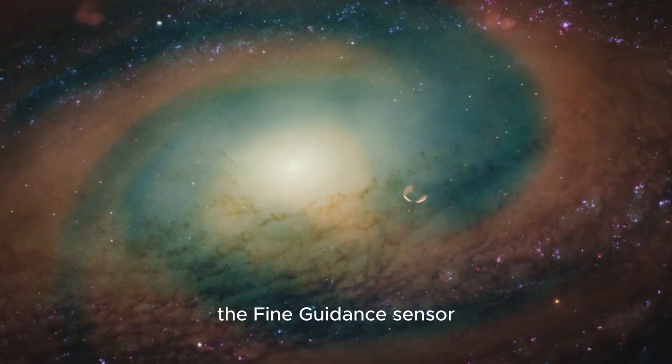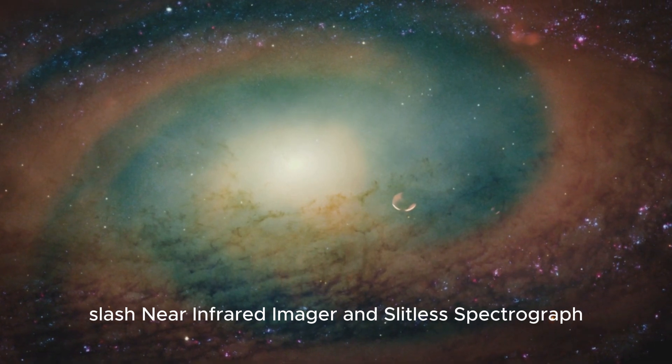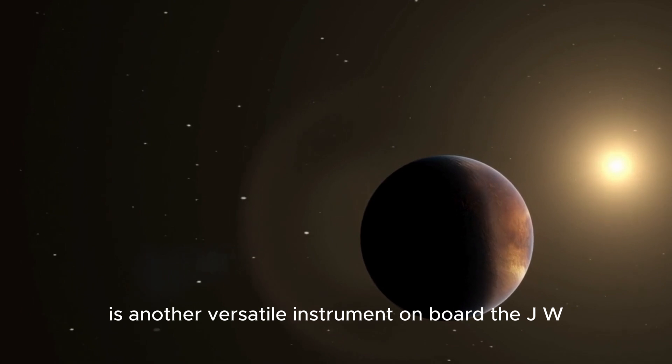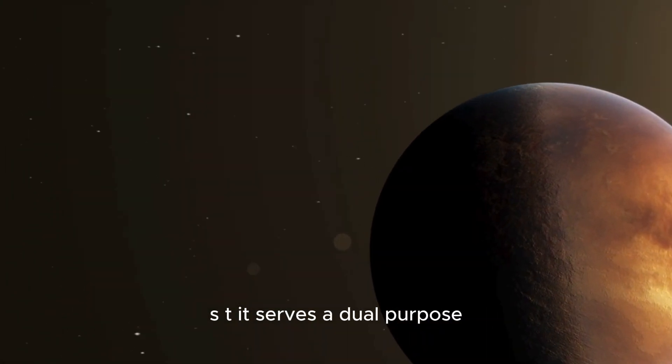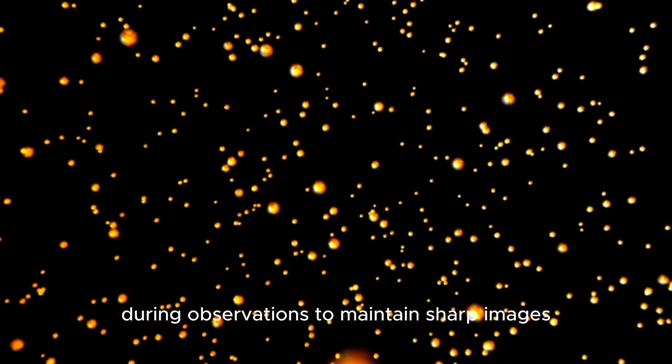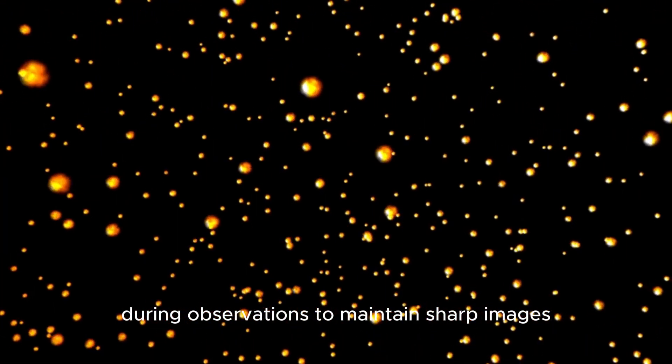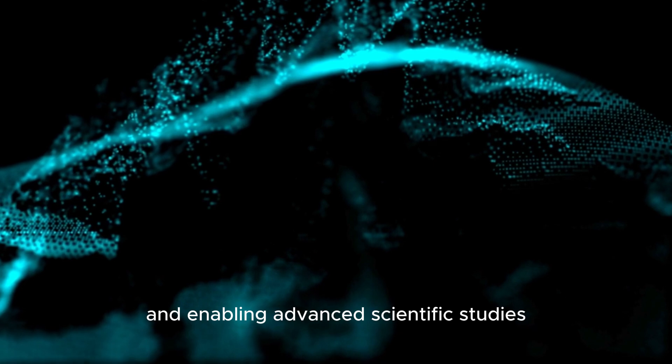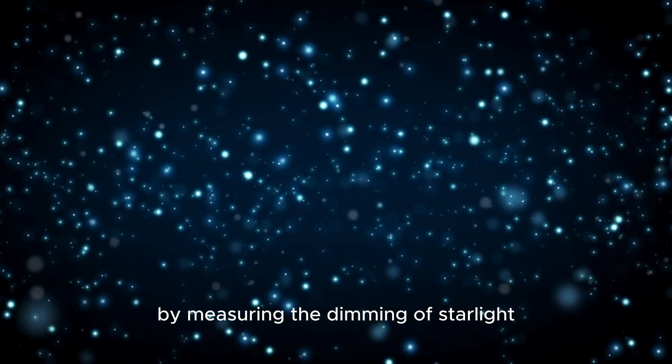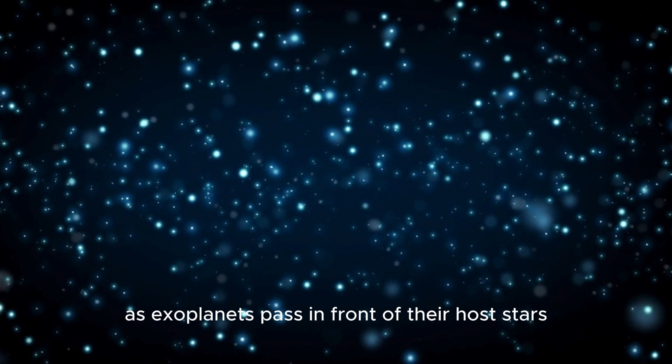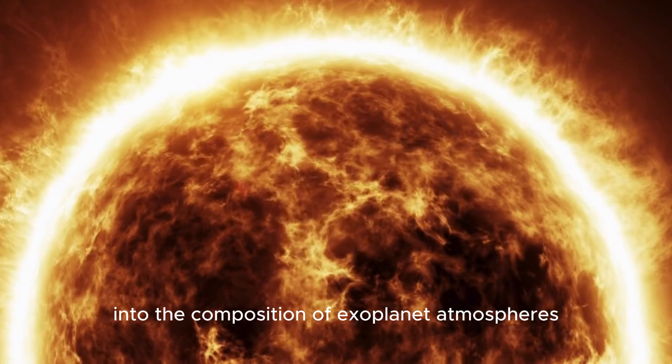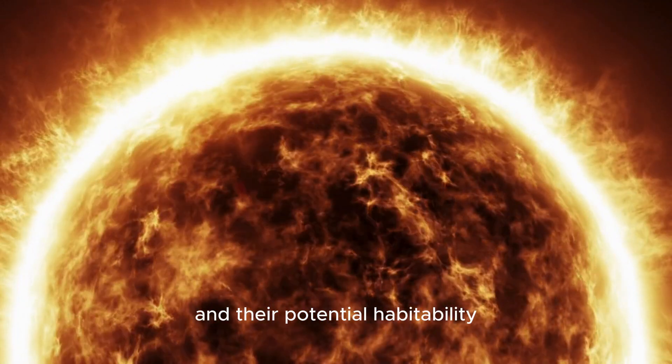The fine guidance sensor/near-infrared imager and slitless spectrograph, FGS-NIRIS, serves a dual purpose: ensuring precise pointing and stabilization of the telescope during observations to maintain sharp images, and enabling advanced scientific studies such as exoplanet transmission spectroscopy. By measuring the dimming of starlight as exoplanets pass in front of their host stars, FGS-NIRIS can provide valuable insights into the composition of exoplanet atmospheres and their potential habitability.